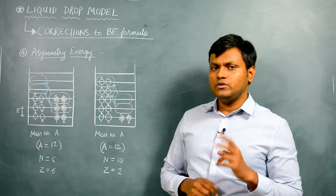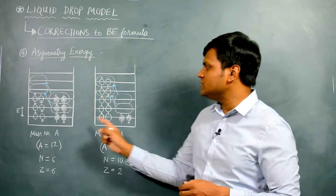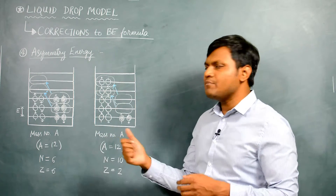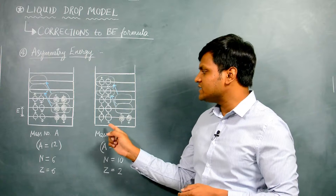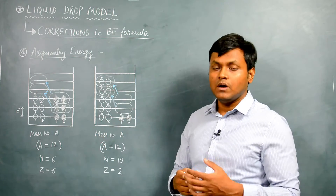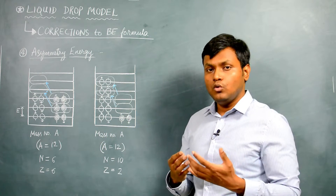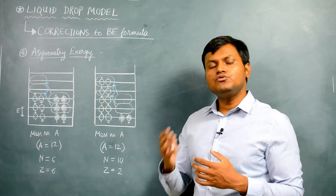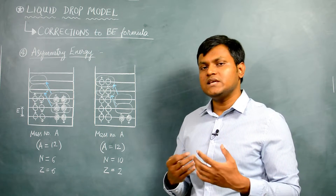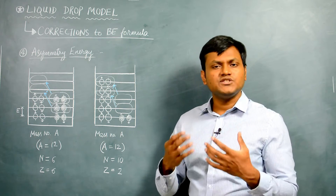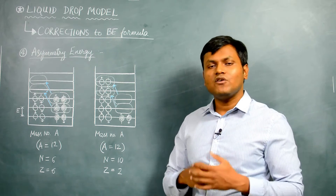The asymmetry energy is basically an energy where those configurations which have a large difference in the number of protons and neutrons are much more unstable compared to those configurations where the number of protons and neutrons are almost equal. To understand the expression for asymmetry energy, we need two different configurations with the same mass number, and we also need to know that in a nucleus, the neutrons and protons arrange themselves in energy levels much similar to the energy levels of an atom.